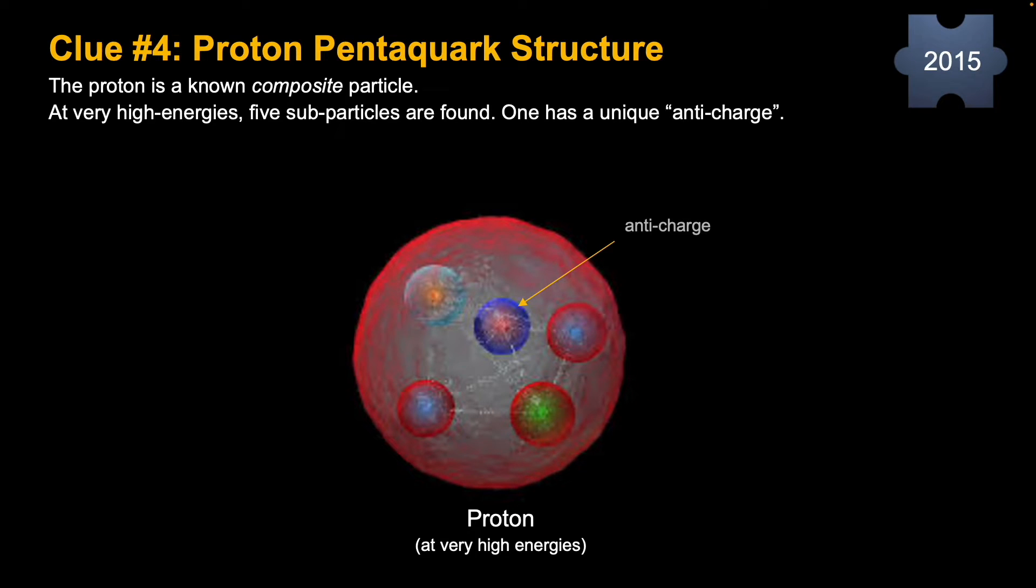But for clue number four, we're now going to jump to this century. Because the proton is a key component of the neutron decay process, we'll pick on one of the clues of the proton. Now the proton was already known to be a composite particle, meaning that it consists of subparticles by the 1960s. But in 2015, it was reported that at high energies, the proton consists of five subparticles. And one of these subparticles is a little bit different than the others. It has an anticharge.